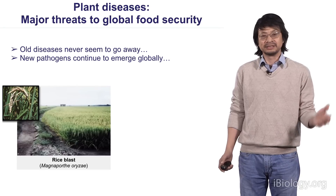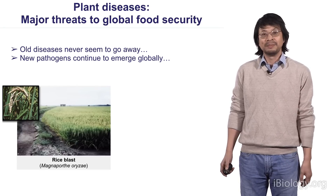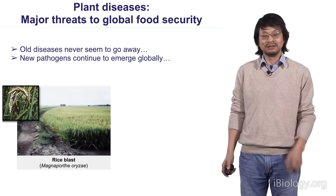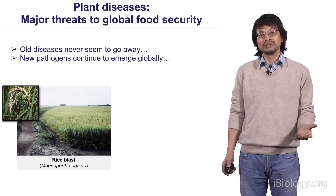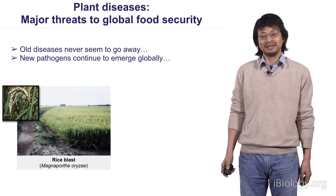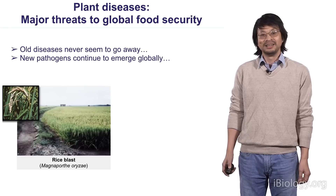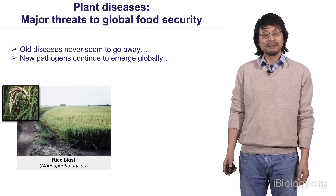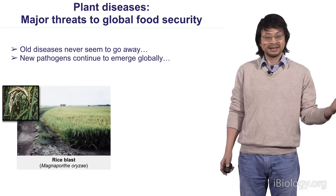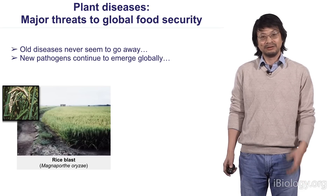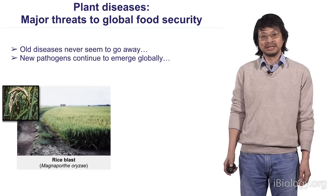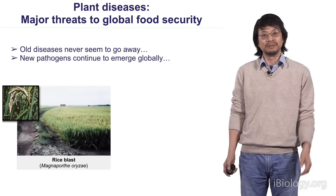There are many such diseases, not to this scale, but they are a major threat to global food security. One of the other diseases is rice blast. I grew up in China in a small village, and it was very severe when I was growing up. Now, 40 years later, it's still a very severe disease. In fact, this is the number one disease in rice production across the globe.